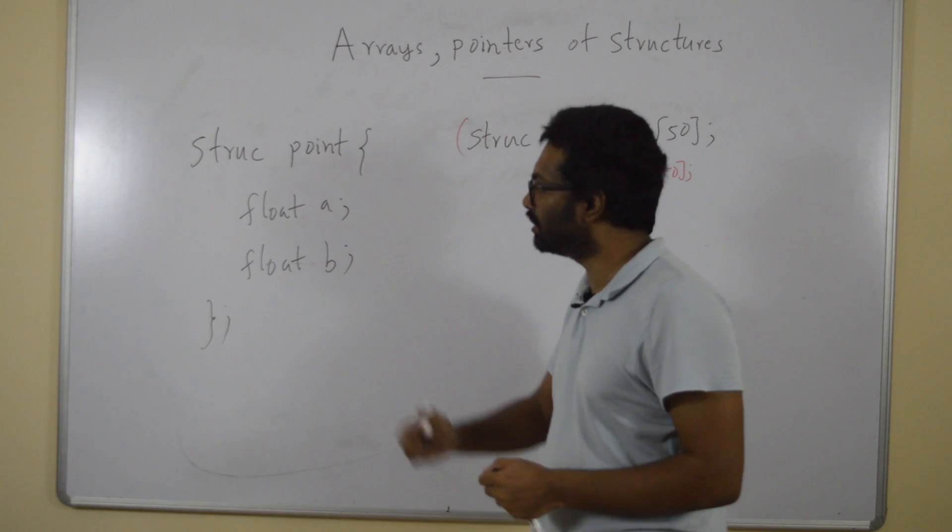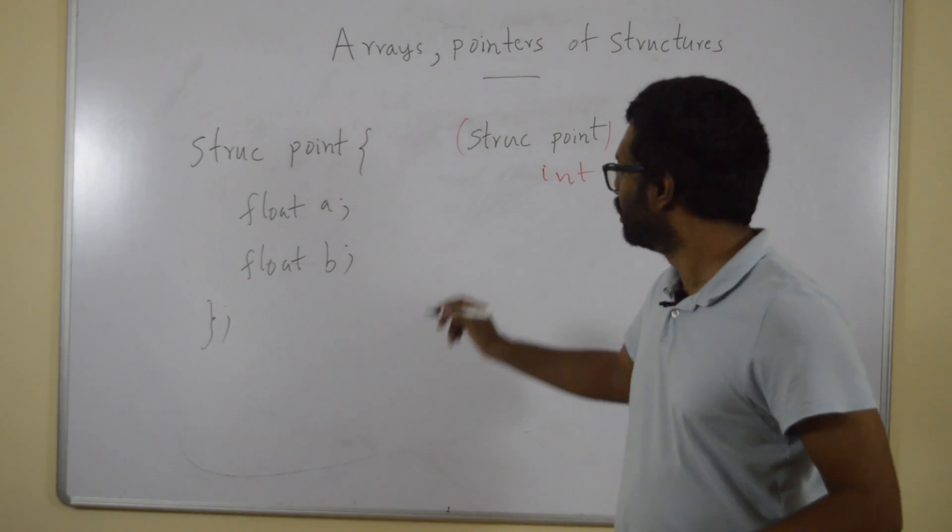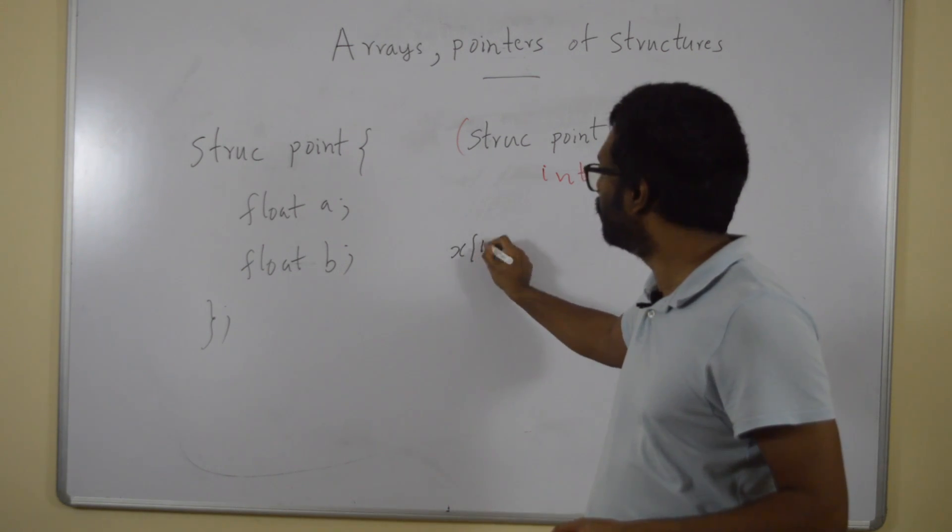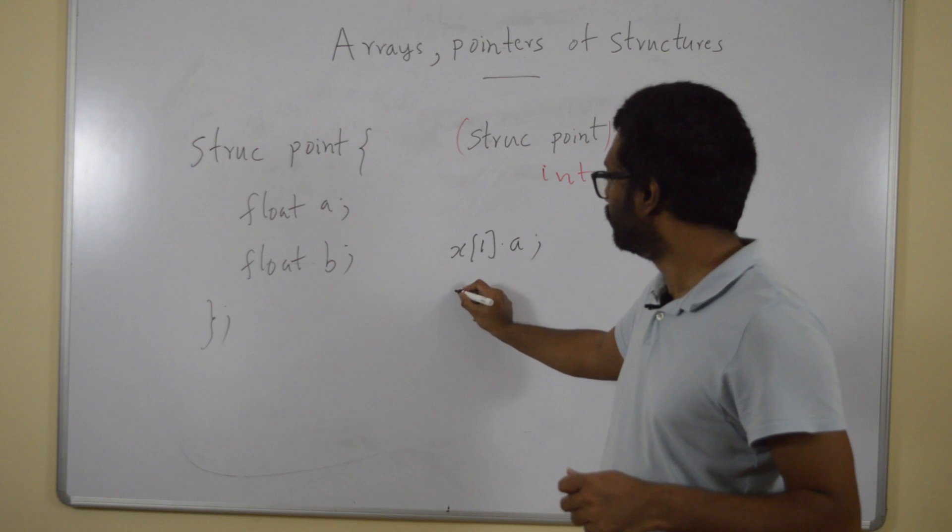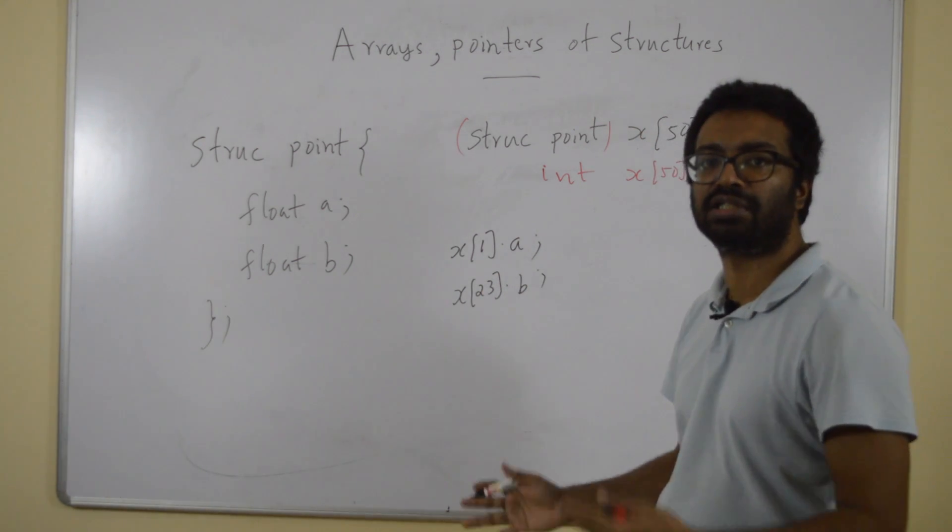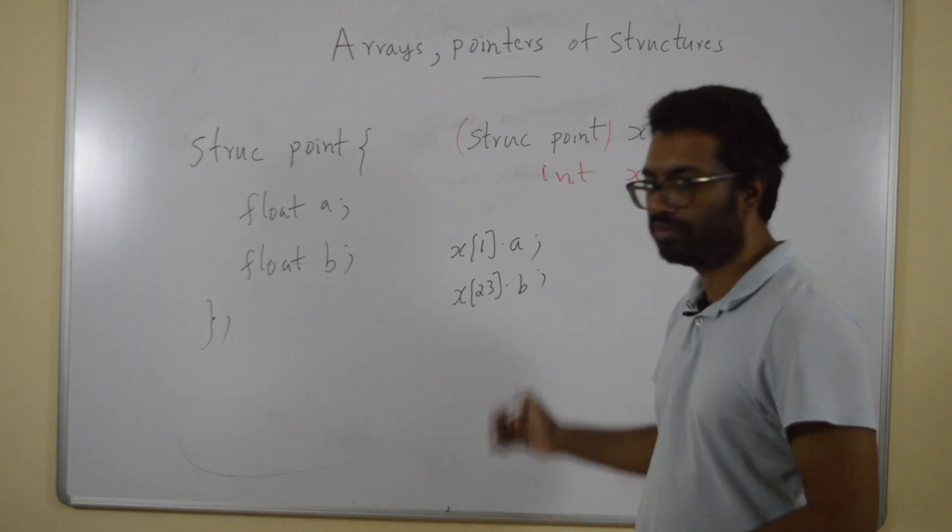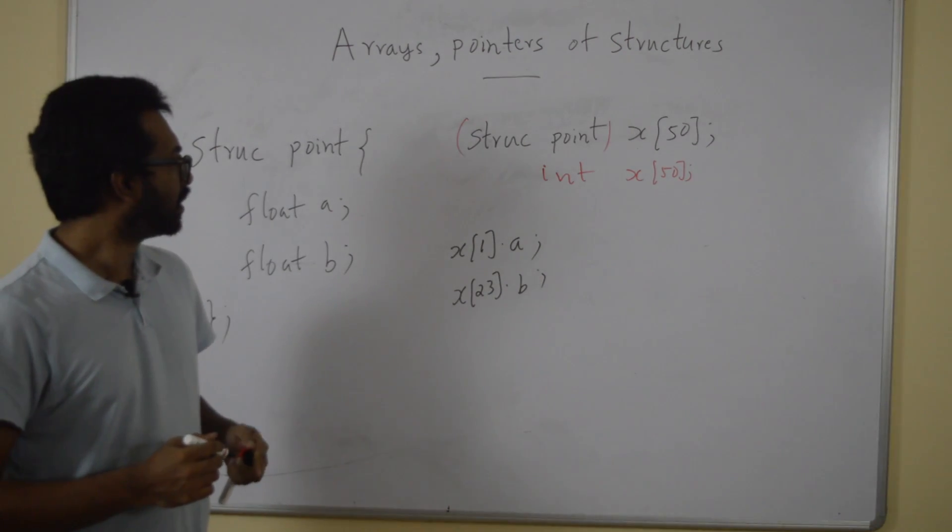What if I wanted to access the float a value of the first one among that? I should write x[1].a. If I wanted the 23rd, I should write x[23].b. This is accessing the float b of the 23rd one. Simple.